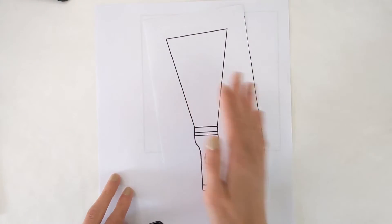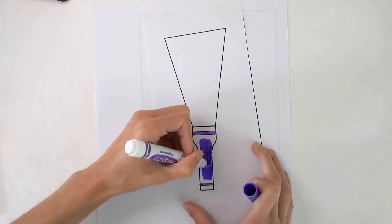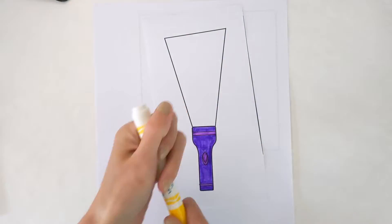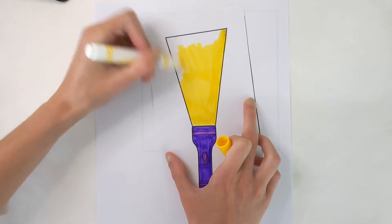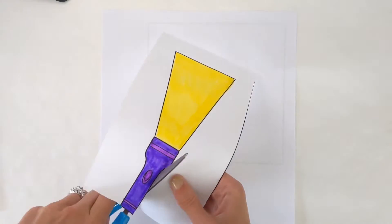For step one, we are going to color in our flashlight. I'm going to make mine purple and make the beam of light a very light color, like yellow. Then, I'll cut it out and put it aside for later.